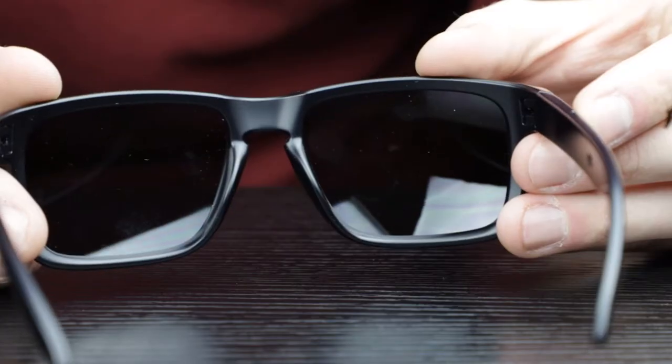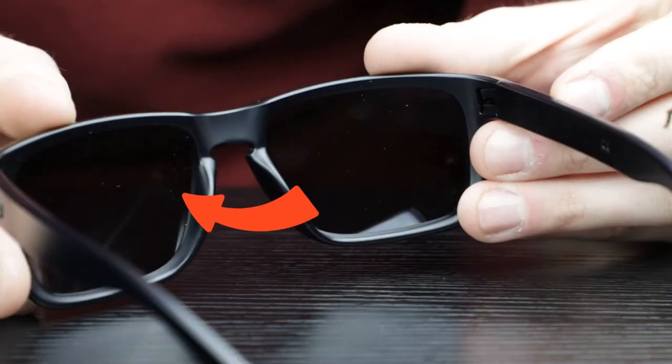Secondly, consider where you would like to place your bifocal lenses. The most common option is on the lower inside of the lenses so you can see over them for normal distance viewing, but some people prefer them to be a little bit higher.